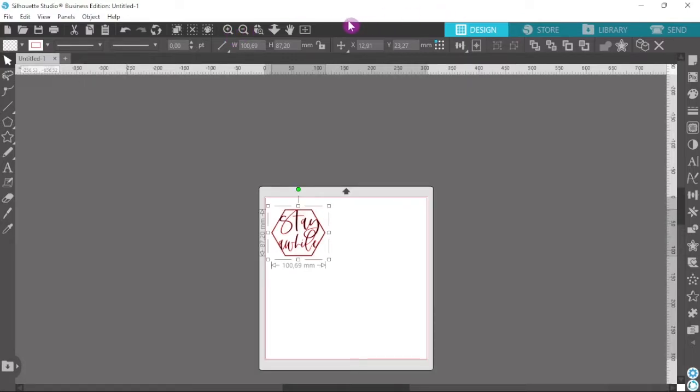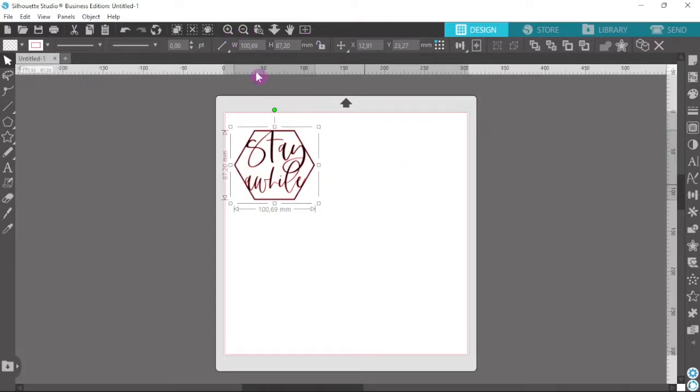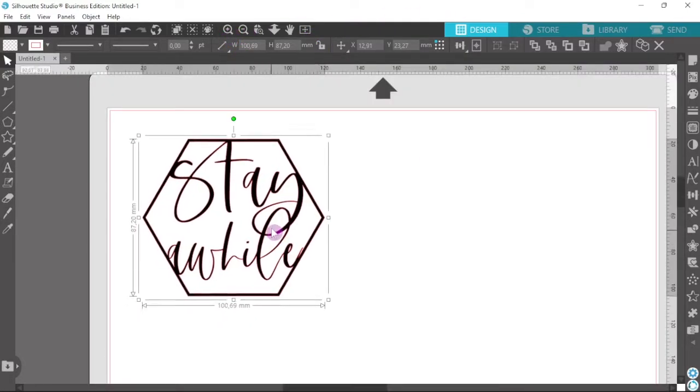Okay so that looks pretty good. There's no reason to change this. All I am going to change is the dimensions of my design. So I did measure my mold and I measured on the inside of the mold. So my mold, the hexagon mold, and you might have the same mold, mine measures nine centimeters across and eight centimeters down.